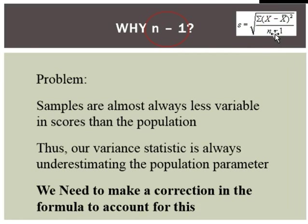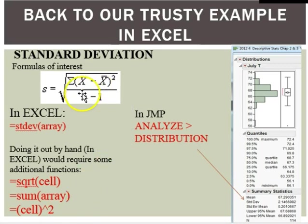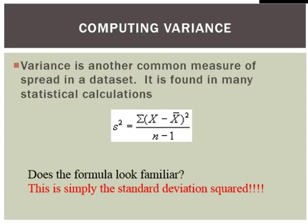The nice thing about using n minus 1 is that the larger your sample size, the less that subtracting 1 will impact your result. For example, if you only had 10 observations, dividing by 9 instead of 10 might inflate the number quite a bit. But if you had 100 observations, dividing by 99 instead of 100 really won't make much of a difference. This is one way we see sample size coming into play — as we have larger samples we become more confident in our estimate of the population. You can calculate this by hand, or just use the standard deviation function in Excel, or find it in the JMP analyze distribution output right there under the mean.